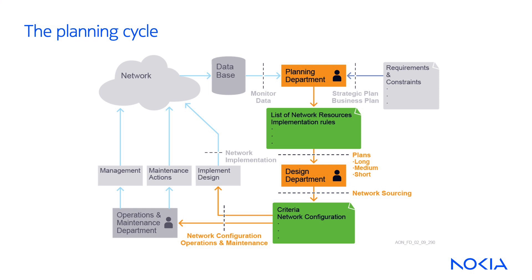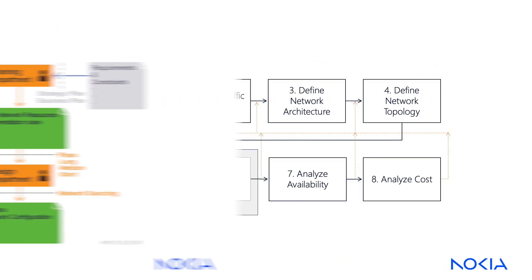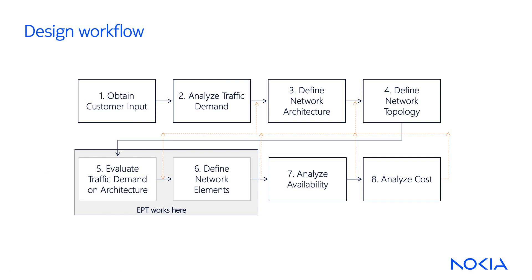Due to the constant network evolution, proper network design has become essential to the network planning process. The planning process is a continuous circular process that involves integration between financial and engineering activities to guarantee the final results. In support of the 8-step process proposed for network design, the Engineering and Planning Tool, or EPT, offers a tool to design a network throughout its whole life cycle. The tool manages photonic transport layers based on the 1830 PSS portfolio.